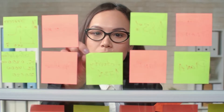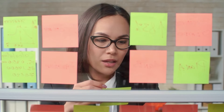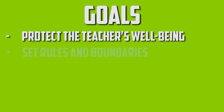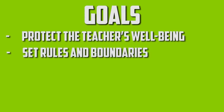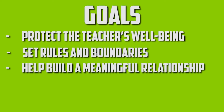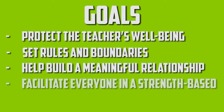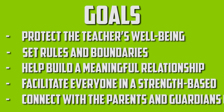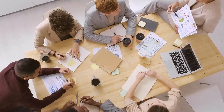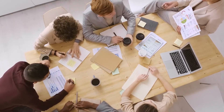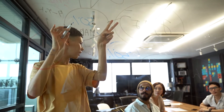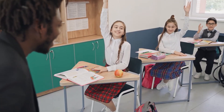Every management plan is different from another, but they normally have these goals: protect the teacher's well-being, set rules and boundaries, help build a meaningful relationship, facilitate everyone in a strength-based approach, and connect with the parents and guardians of children. In short, the teacher ought to have a flexible plan in place to make sure that the strategies are properly outlined and applied in the classroom. The classroom management plan combines many things like policies, guidelines, etc., and helps the teachers and the students to achieve their goals.